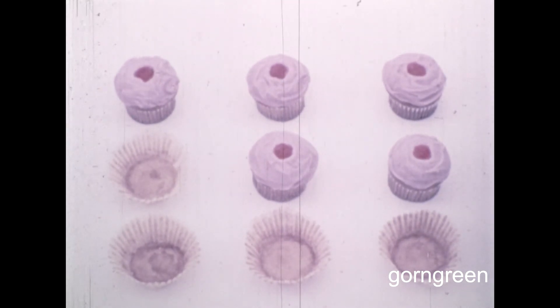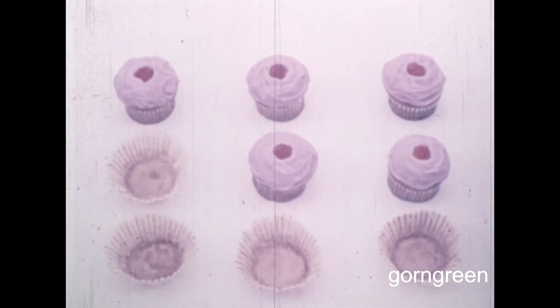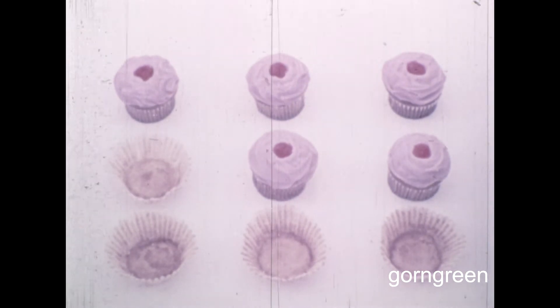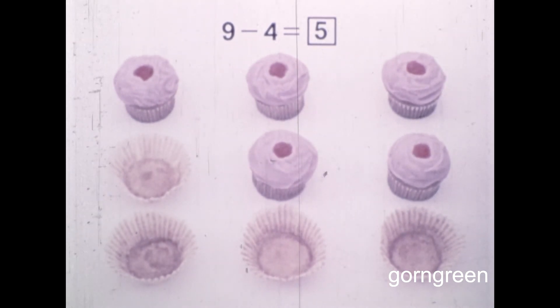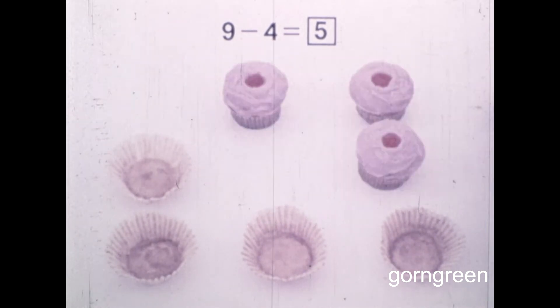How are we going to find the answer? I know. Just count the empty wrappers. Then we'll know how many were eaten. One, two, three, four. There are four empty wrappers. Four cupcakes were eaten. So, nine minus four equals five. That's right. Nine cupcakes minus the four that were eaten means five are left. Could you please clean up that mess? Thank you.